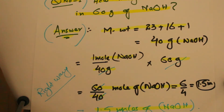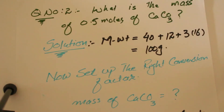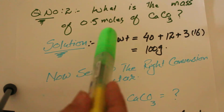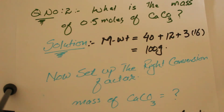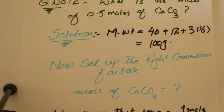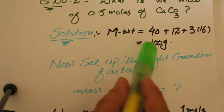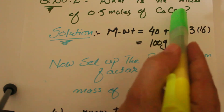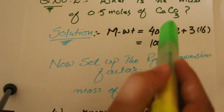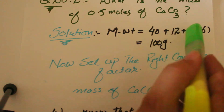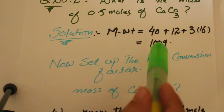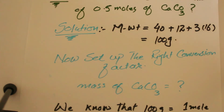The second question is: what is the mass of 0.5 moles of calcium carbonate? We have to calculate the number of grams of calcium carbonate from 0.5 moles. In the first step, I calculate the molecular weight of calcium carbonate: 40 grams for calcium, 12 for carbon, and 16 multiplied by 3 for the three oxygen atoms.